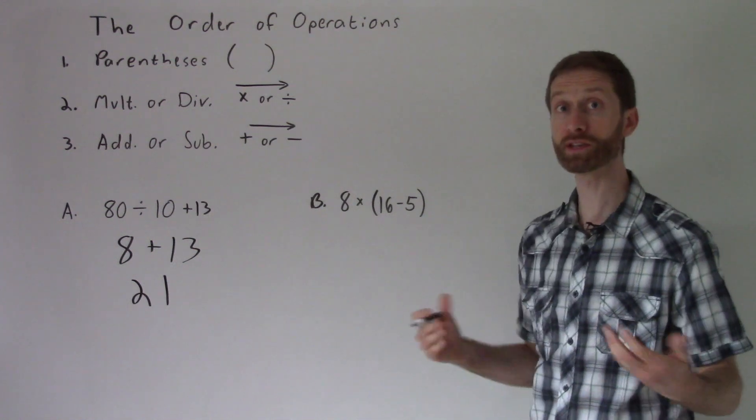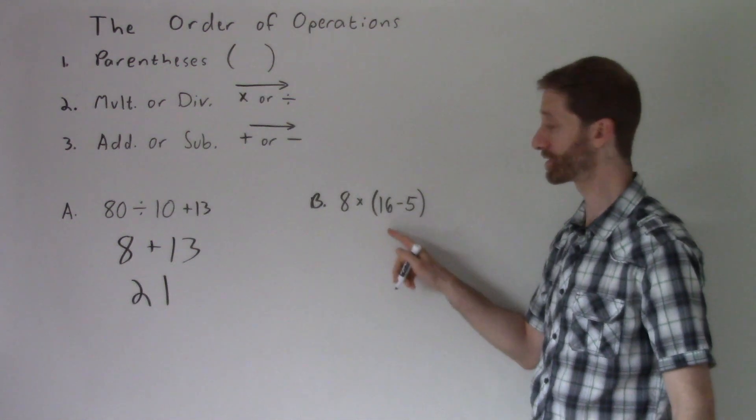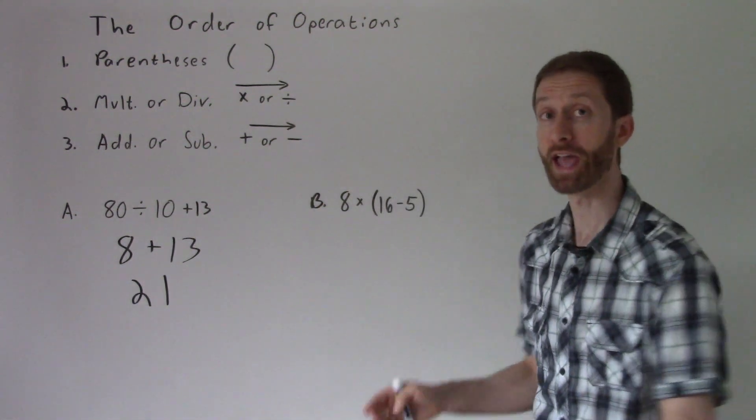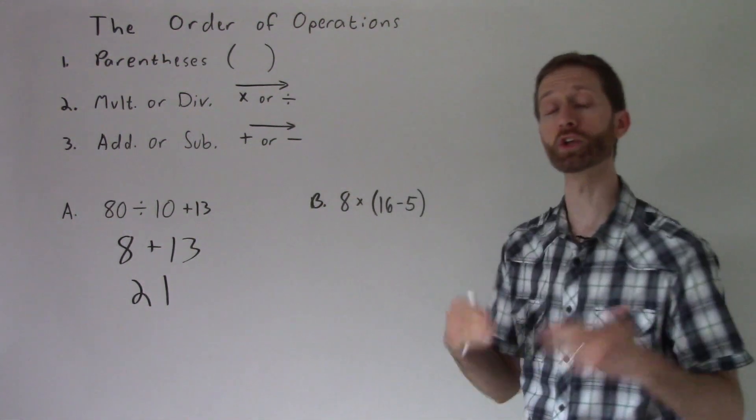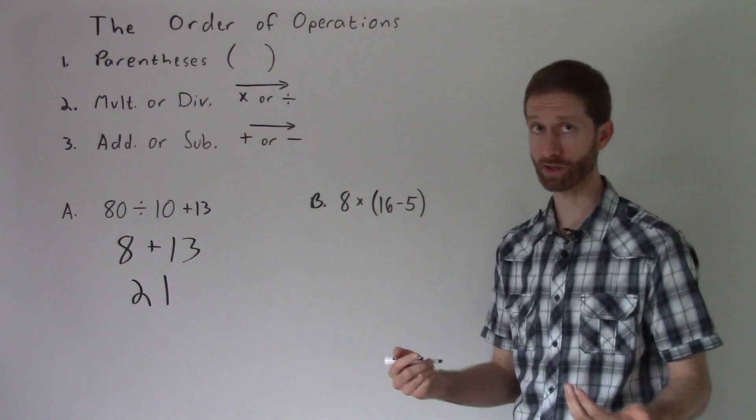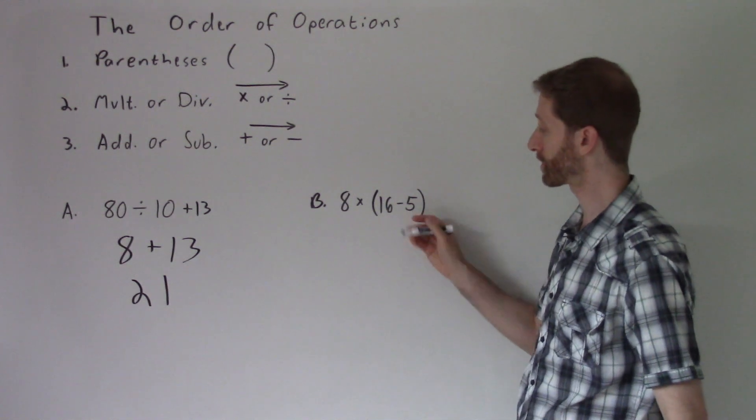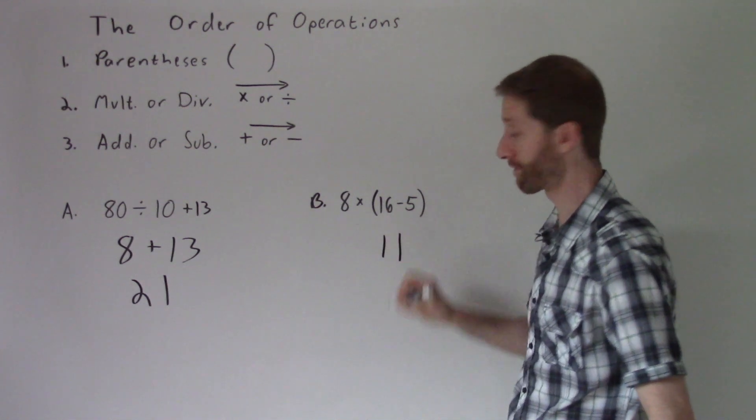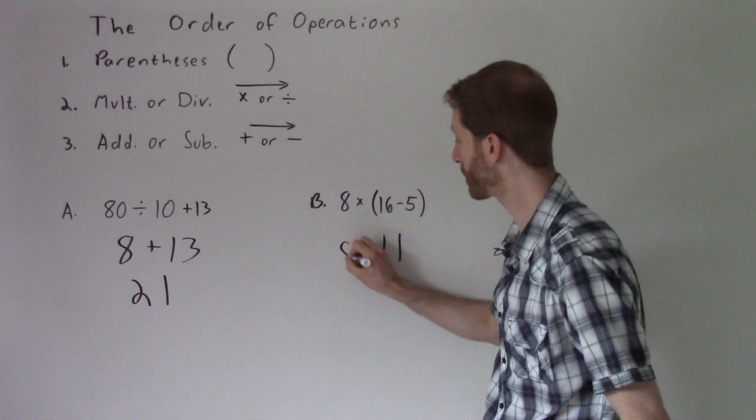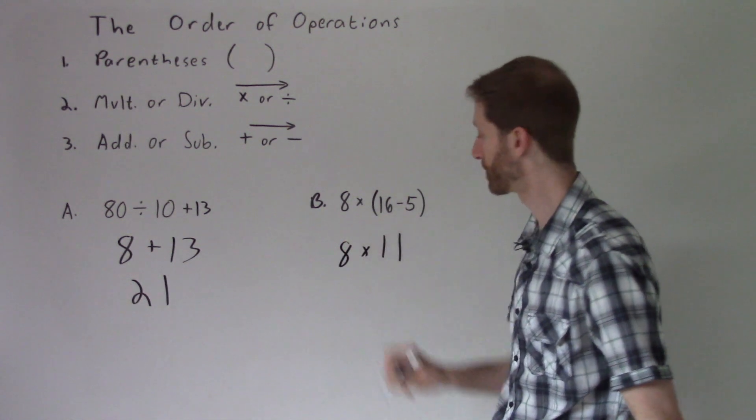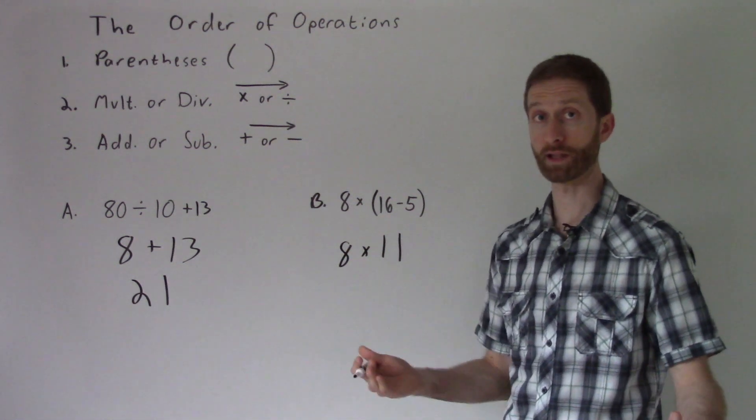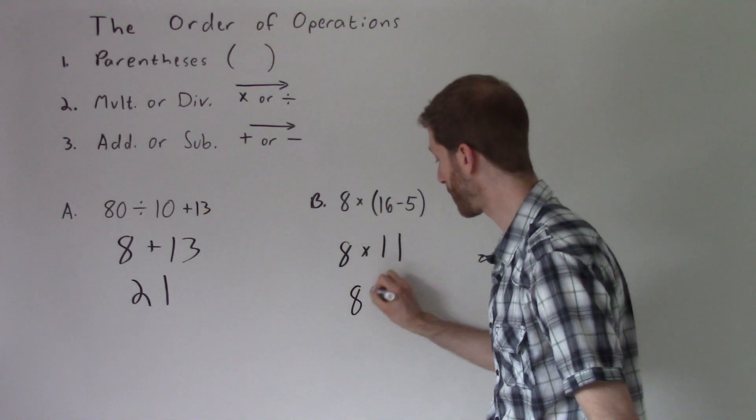Let's check out the second problem where we see the order of operations needs to be in full effect. We have parentheses here, so we're going to go immediately to the parentheses. And within those parentheses, we're going to use the order of operations. Well, the only operation in there is subtraction. So I'm going to deal with the subtraction, 16 minus 5. So that is 11. And from there, I'm going to copy the rest of what I've yet to evaluate, 8 times 11. So now I'm left with a simple multiplication problem of 8 times 11, which is 88. And that is our answer.